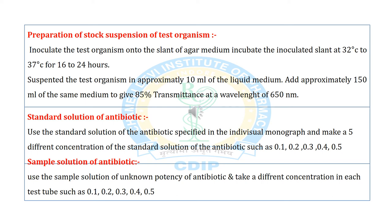For the standard solution of antibiotics, use the standard solution specified in the individual monograph and prepare 5 different concentrations: 0.1, 0.2, 0.3, 0.4, and 0.5 ml. For the sample solution of antibiotics, use a sample of unknown potency and take different concentrations in each test tube: 0.2, 0.3, 0.4, and 0.5 ml.